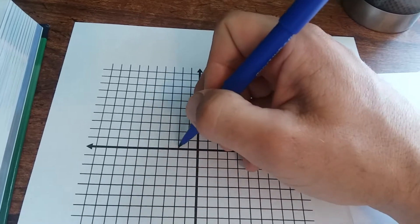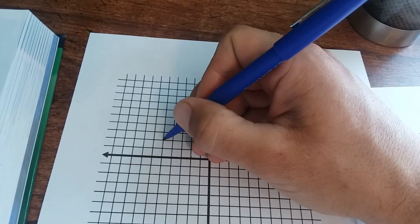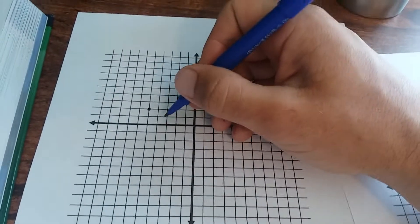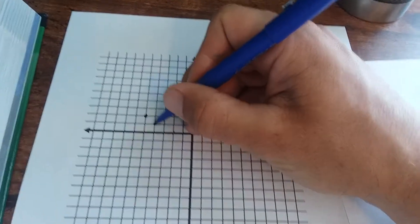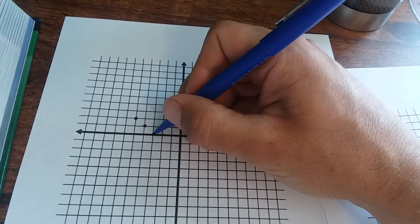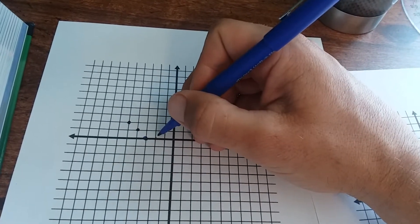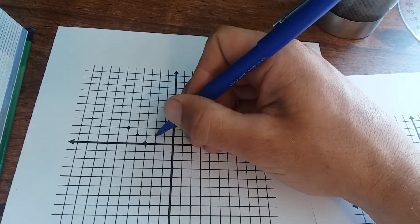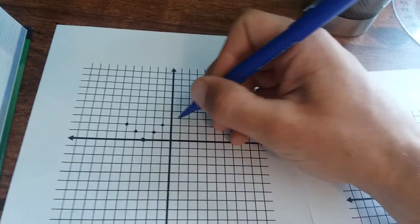Negative 5 positive 2. I keep saying it wrong. Negative 4 up 1. Negative 3, 0. Negative 1, 2. Negative 2, 1. And then 0, 3.